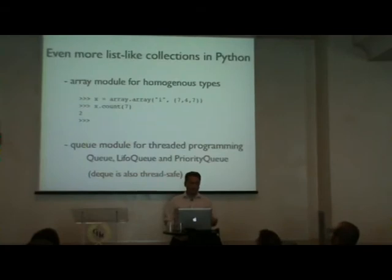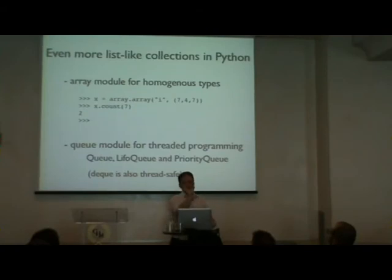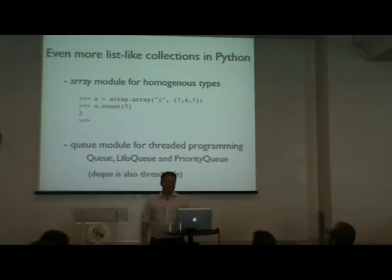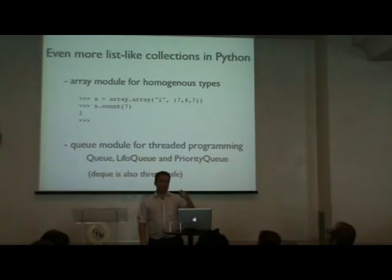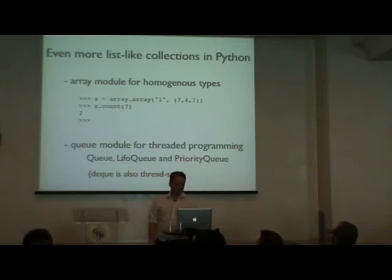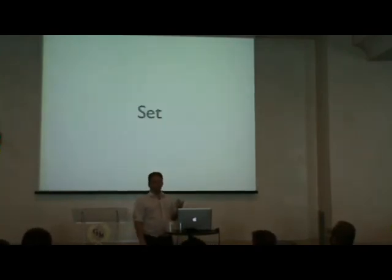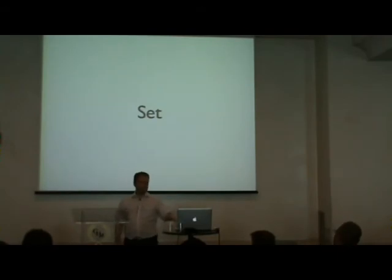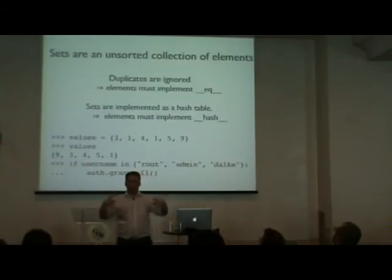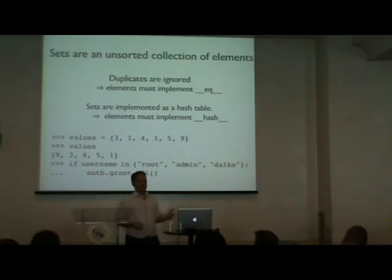There are more list-type collections in Python. The array module lets you store primitive integers compactly — keeping the actual value in four bytes rather than a full Python object. For inter-thread processing, the deque module is thread-safe, so you don't have to use the queue module for basic producer-consumer patterns. But if you need a bounded queue, you do need the queue module.